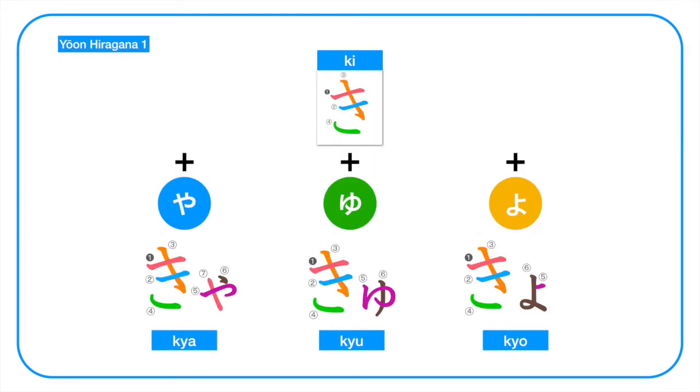The first group we have ki plus ya, yu, yo. If you notice when we write the combo hiragana or the yōon, we have to write the first hiragana bigger and the second ya, yu, yo being smaller or half-sized. And we have to pronounce them together.